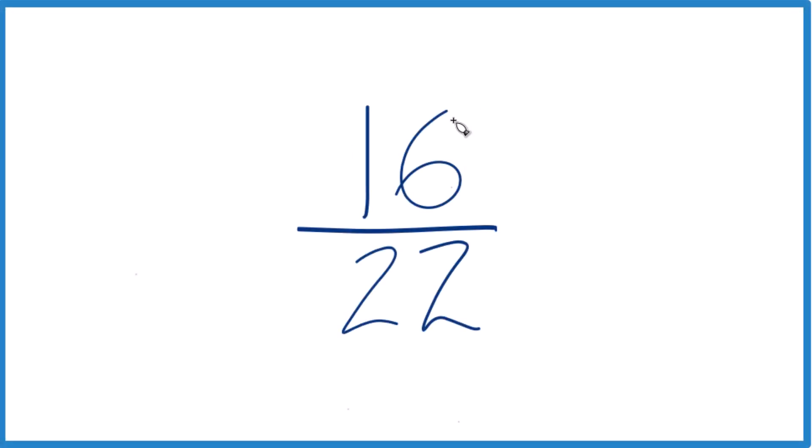Here's how you can simplify the fraction 16/22, or 16 over 22. So what we want to do is find a common factor for 16 and 22, and then we want to reduce or simplify.